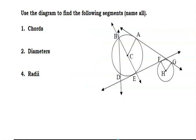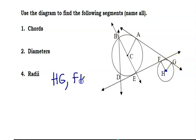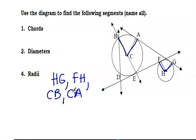Let's use this diagram and identify the chords, the diameters, and the radii — radius plural is called radii. So the radii are the ones that go from the center to the outside: HG and FH. All of these are the radii — CB, CA, and CE. Again, it has to go from the center to the outside.